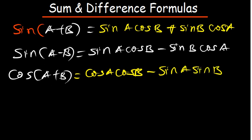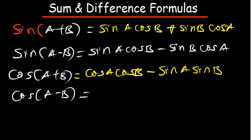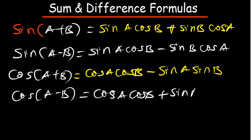Now if I want to do for minus, it's going to be the opposite. If here there is minus, then the sign is going to change — it's going to be plus. So we are going to have cos A cos B plus sine A sine B.